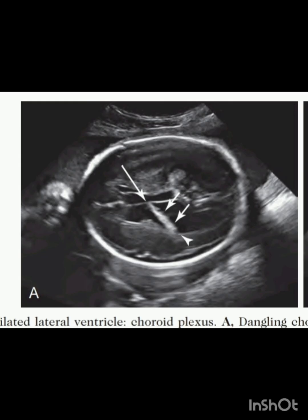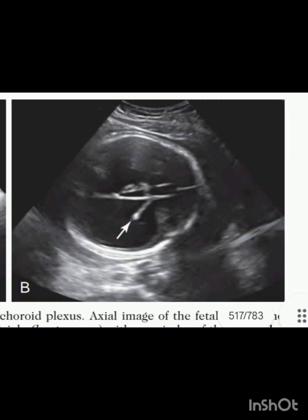First up, we'll talk about the dilated lateral ventricle and the dangling choroid plexus. In this image you can see the choroid plexus indicated by the two short arrows — its anterior end is attached to the medial wall of the lateral ventricle, and the remainder of the choroid plexus is dangling towards the lateral wall, indicated by the arrowhead. In this axial image you can see a diminutive choroid plexus in an enlarged lateral ventricle, indicated by the short arrow.